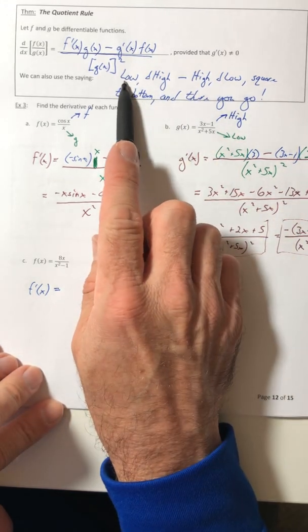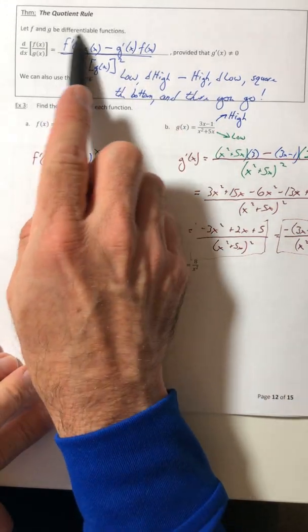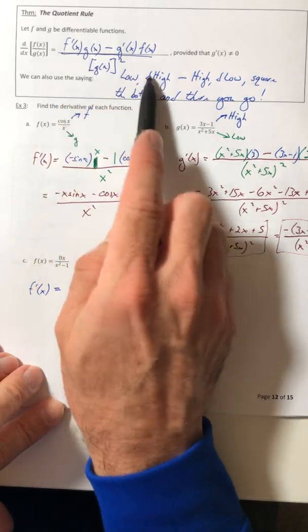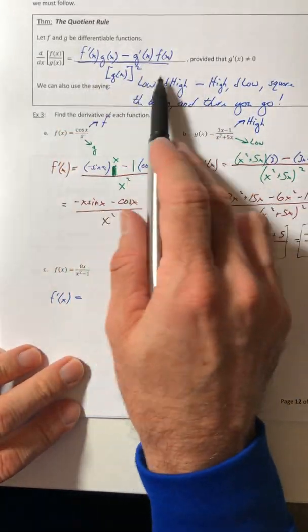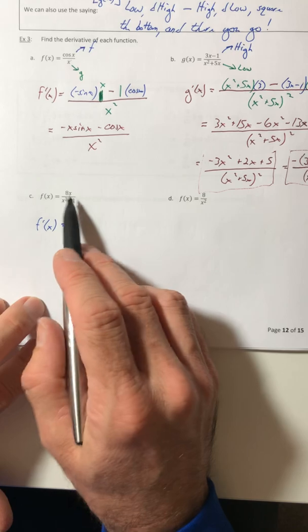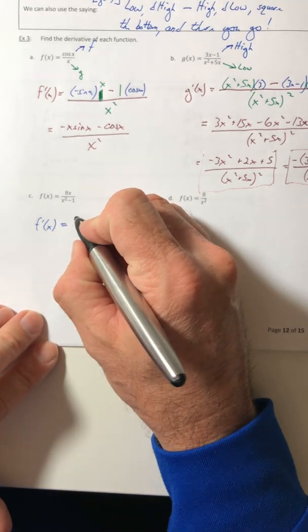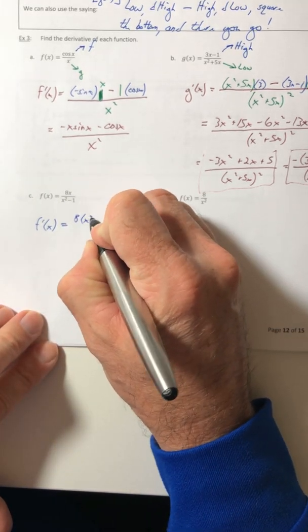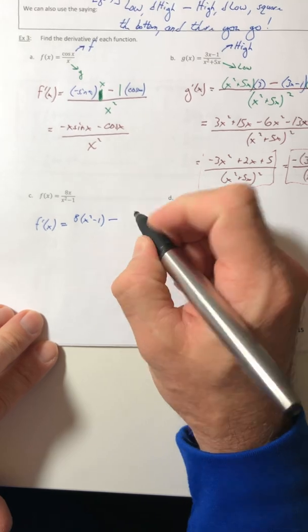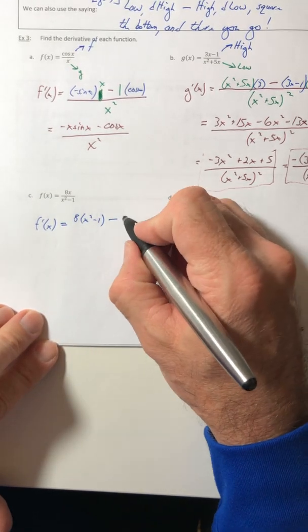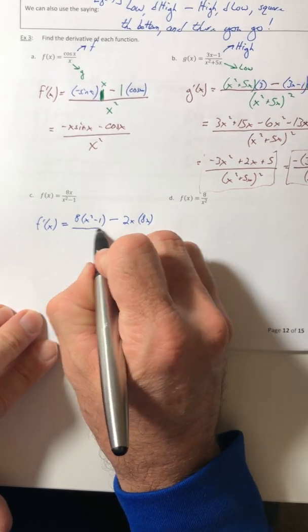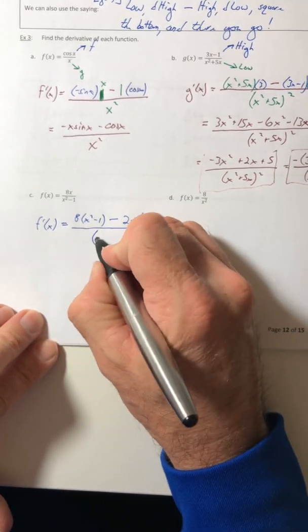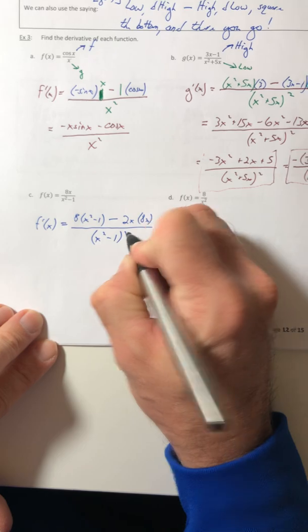So whether you do the low d high, or the derivative of the top times the bottom, it's the same thing, just in a different order. So you can use whatever you want. I'll typically go with this, but you can go with this one too. Okay, so the derivative of the top is just 8 times the bottom minus the derivative of the bottom times the top all over the bottom squared.